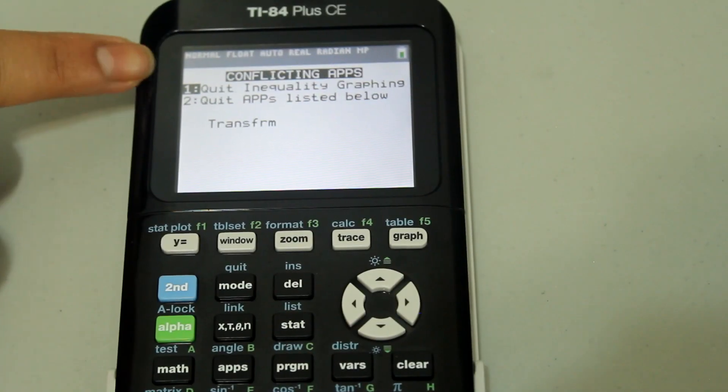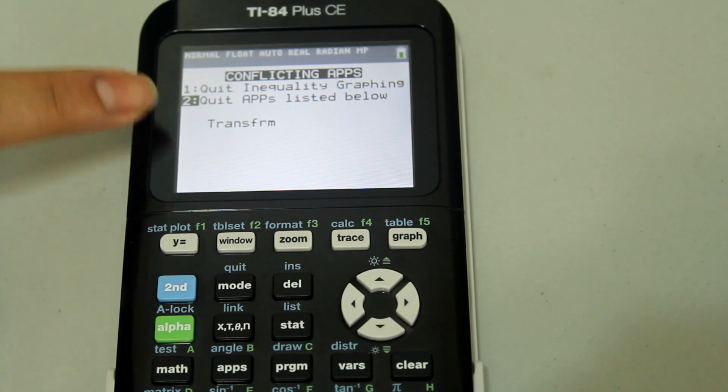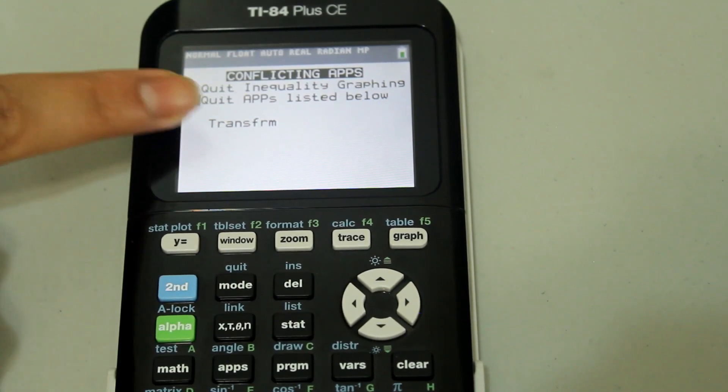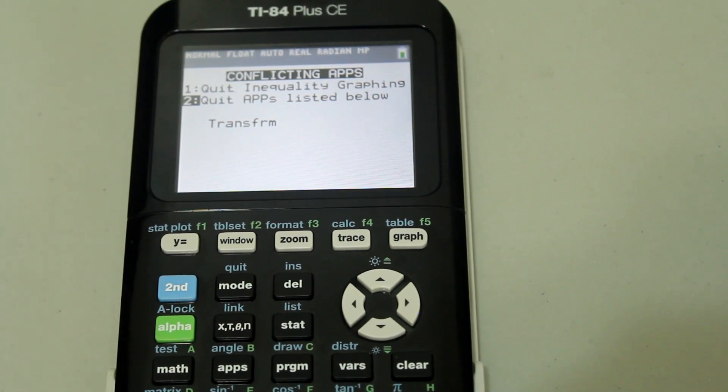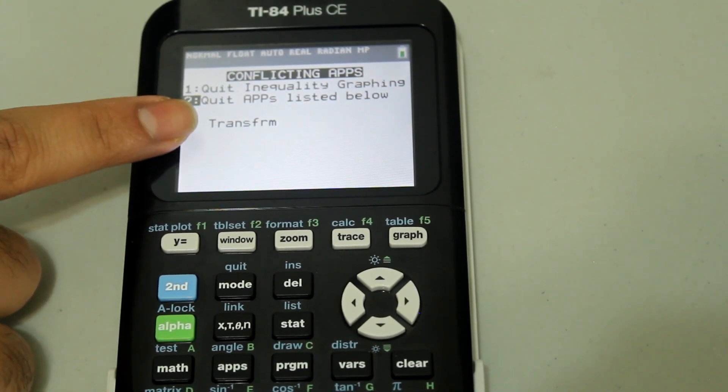We're trying to quit an app that conflicts with inequality. So we're going to go down to option 2 that says quit apps listed below. And these are apps that conflict with the inequality app. So we're trying to quit transforms.